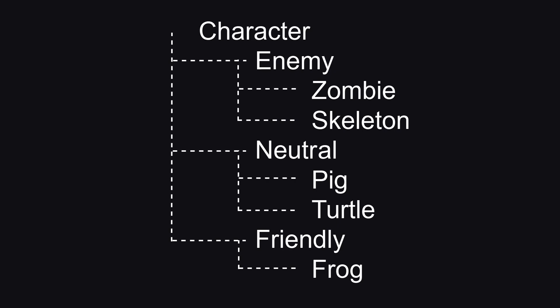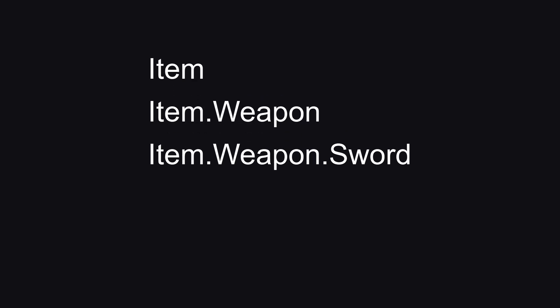Gameplay tags are hierarchical labels that can be used to identify, match, categorize, define states, or filter objects. For example, a gameplay tag might look like this: item.weapon.sword. Parent parts like item.weapon and item are also separate valid tags.